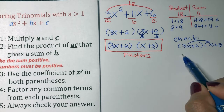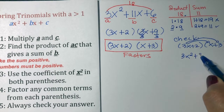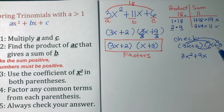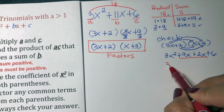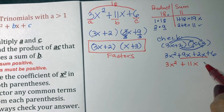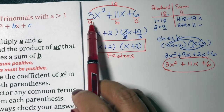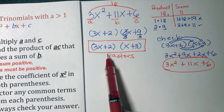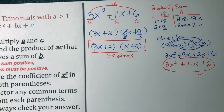3x times x is equal to 3x squared. 3x times 3 is equal to 9x, and 2 times x is positive 2x, and 2 times 3 is positive 6. Let us combine like terms: 9x and 2x are like terms, so bring down 3x squared, and this becomes 11x plus 6. Our original problem is 3x squared plus 11x plus 6 — multiplying our factors gives the same answer, so our factors are correct.